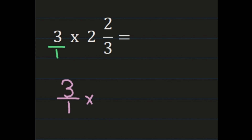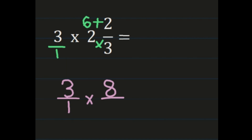We convert the mixed number 2 and 2/3 into an improper fraction: denominator times whole number is 3 times 2 equals 6, and 6 plus the numerator 2 equals 8. So 8 is our new numerator and the denominator of 3 remains the same. Now we're ready to multiply numerator times numerator and denominator times denominator.